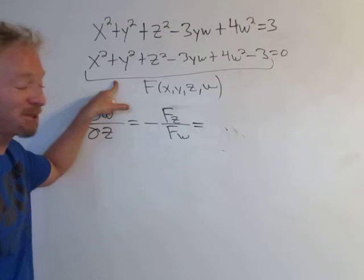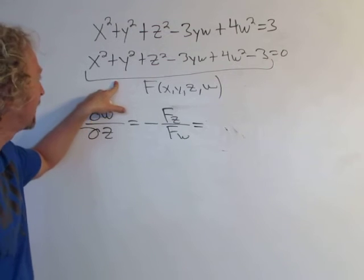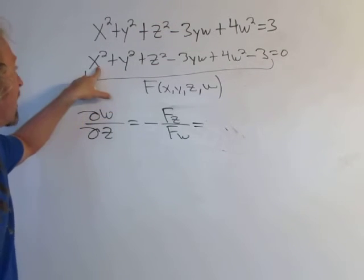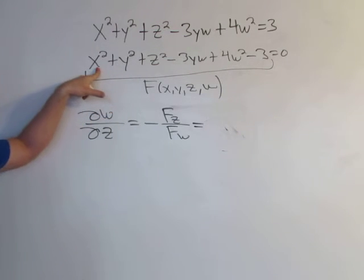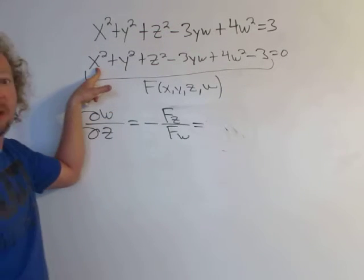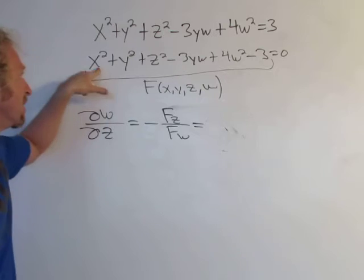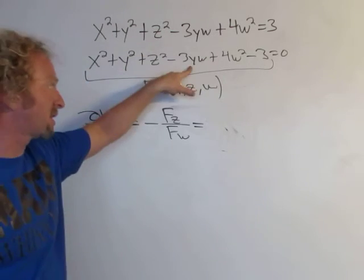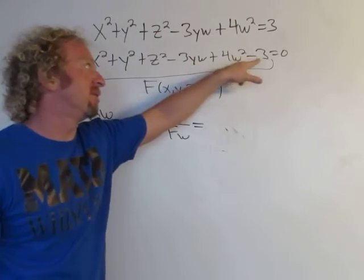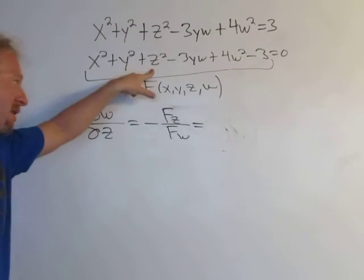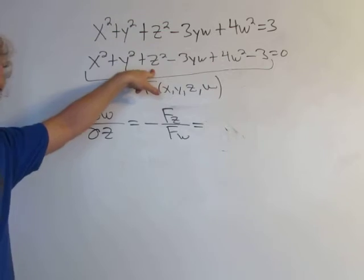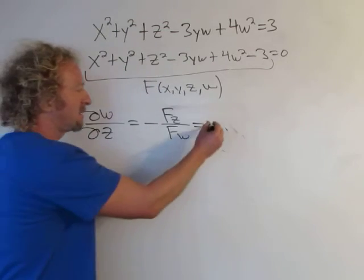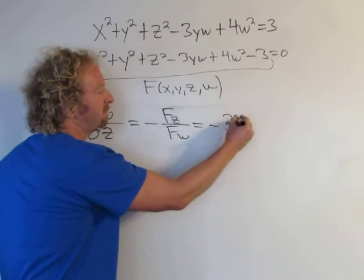Partial with respect to z: everything except z is constant, so all the other terms are zero. This derivative here is 2z. So it's minus and then 2z on the numerator.